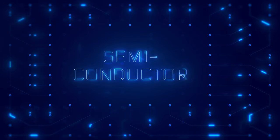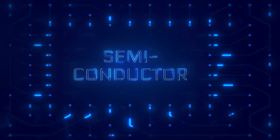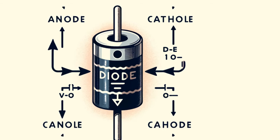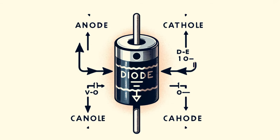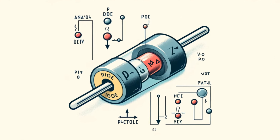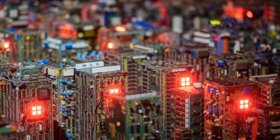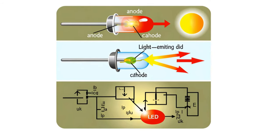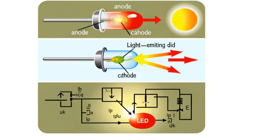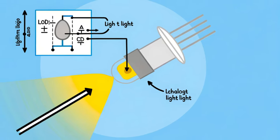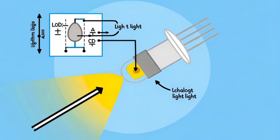Diodes — guiding the flow of electricity. Diodes are two-terminal electronic components that allow current to flow in only one direction. They are essentially one-way valves for electricity, blocking current flow in the reverse direction. Diodes are based on the P-N junction. When a positive voltage is applied to the P-type side of the diode, current flows easily through the device. However, when a negative voltage is applied, the depletion region widens, blocking the flow of current. This unidirectional current flow property makes diodes useful in a wide range of applications, such as rectifying alternating current (AC) to direct current (DC), protecting circuits from voltage spikes, and generating light in light-emitting diodes (LEDs).